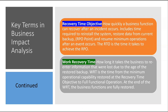Two more important terms are Recovery Time Objective (RTO) and Work Recovery Time (WRT). The RTO is different from the RPO. The Recovery Time Objective is how quickly a business function can recover after an incident occurs. It includes the time required to reinstall the system and restore data from the current backup — that's your RPO point of minimum functionality. The RTO is the time it takes to achieve the RPO.